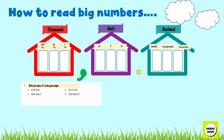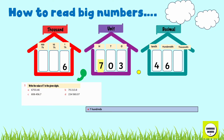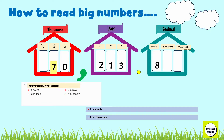Question number three — What is the value of the digit seven in these numbers? In 6,703.46, the value of seven is seven hundreds. In 70,213.8, the value of seven is seven ten-thousands.